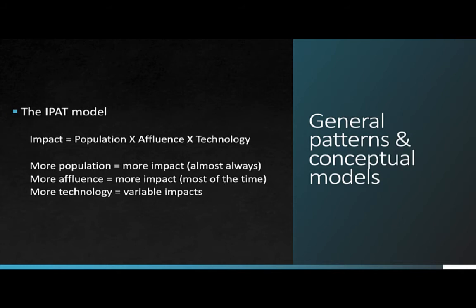There's a well-known concept in environmental classes called the IPAT model. This is an example of one of those conceptual models I was talking about in the last video. I personally am not a big fan of this model because I think it's oversimplistic, but it's still worth mentioning here. The basic idea is that the environmental impact of anything is a product of population times affluence times technology.